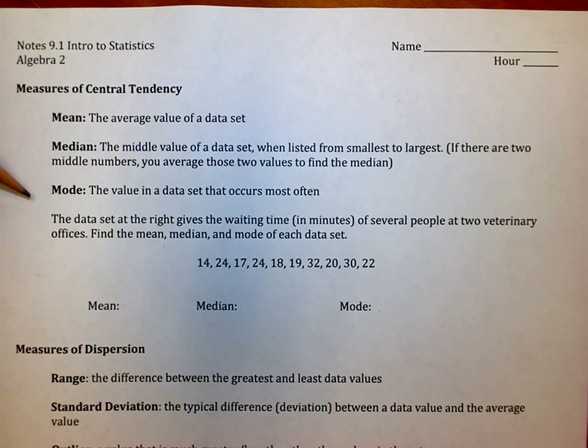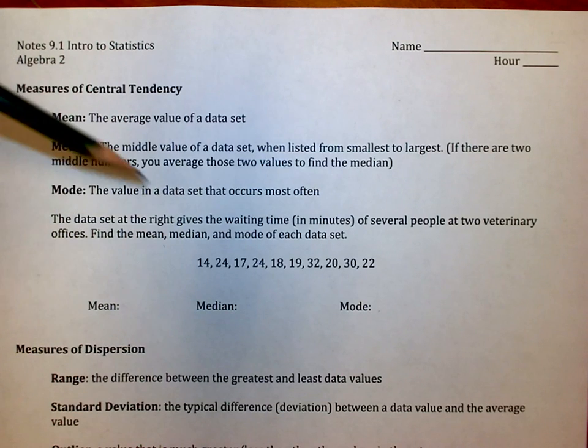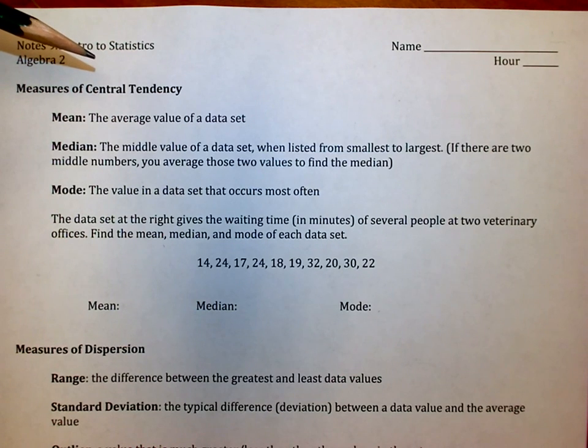I'm more interested in doing a quick example just to refresh your memory, then I'm going to show you how to do this on the calculator. The data set below gives the waiting time in minutes of several people at two veterinary offices. Find the mean, median, and mode.